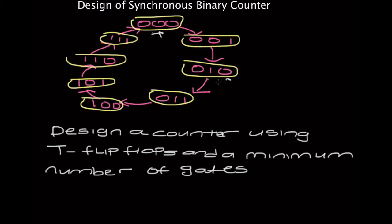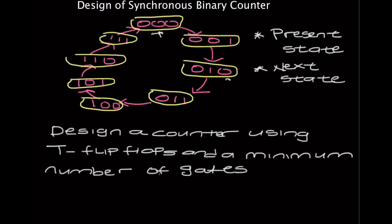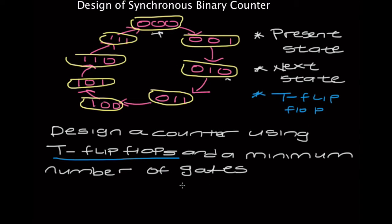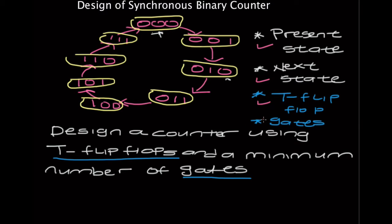So now we know that before we design the synchronous binary counter, we need to have the present state and the next state. And in the question given, it tells us to design this counter using a T flip-flop. So we know that we need to use a T flip-flop somehow, and we're going to need gates — AND gates, OR gates, NOR gates, EXCLUSIVE OR — but just use the minimum number possible. These are the four things we need to know before we can design these synchronous binary counters.